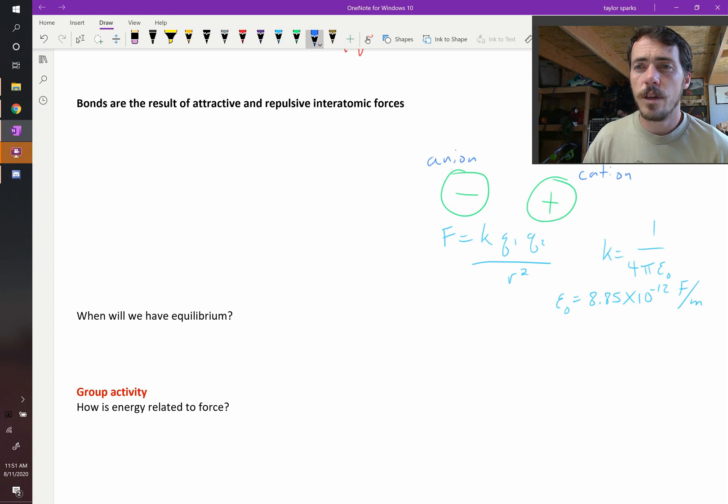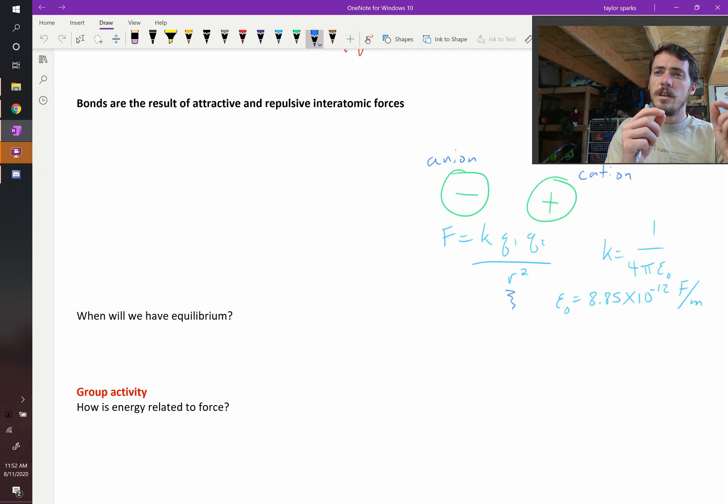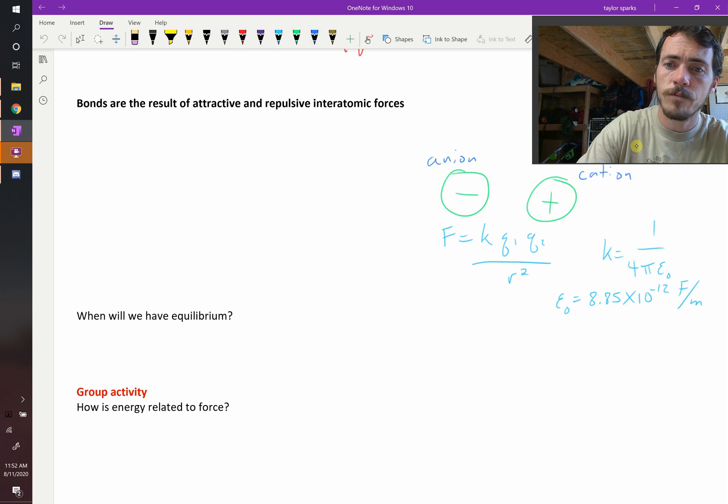Those things, as they get closer and closer together—the attraction, what does it do? Well, as r gets smaller and smaller down here, what should F do? F should get larger, which makes sense. If you bring two charges really far away from one another, there's no attraction at all. But as soon as they start to get closer and closer, that attraction really ramps up.